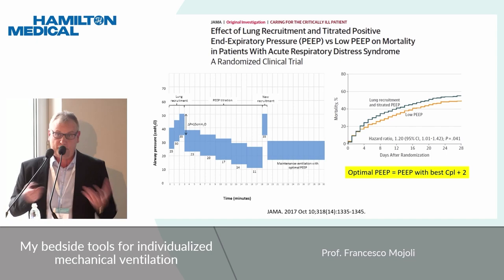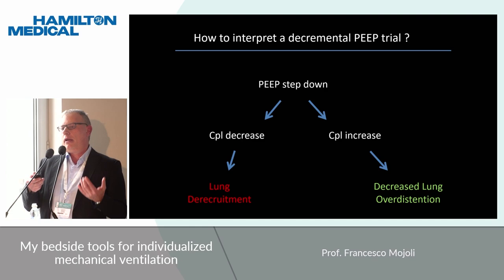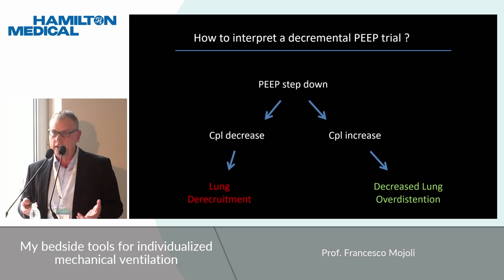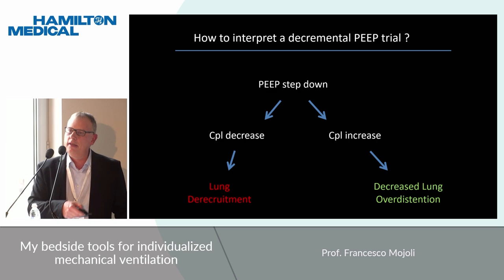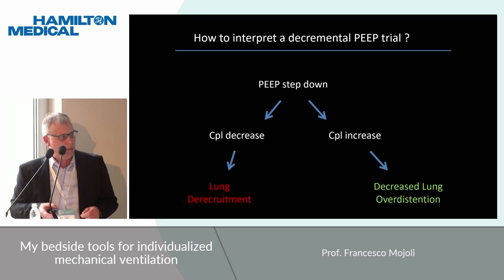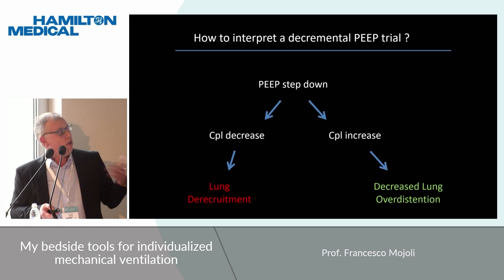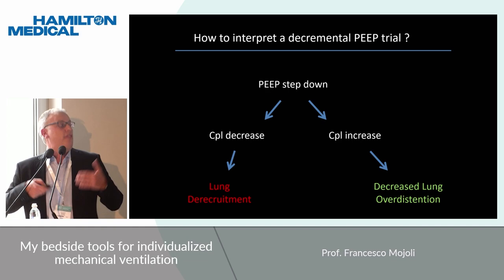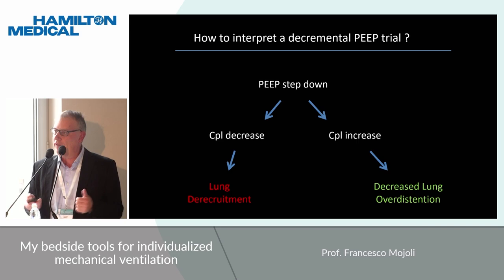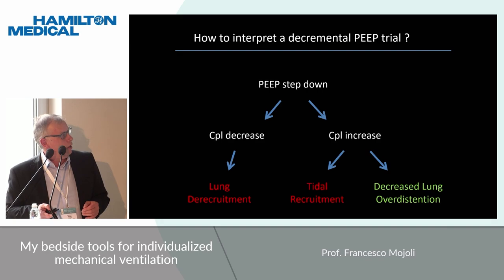Several explanations for this finding were proposed and discussed. I have one: sometimes the interpretation of the decremental PIP trial can be complicated by tidal recruitment — opening and closing. When you perform a PIP step down and see a decrease of compliance, this is easy to interpret as lung de-recruitment. Whereas if you see an increase of compliance, this can be due to decreased lung overdistension — a favorable mechanical effect — or to tidal recruitment, which we don't like. This is because the snap opening of collapsed alveoli generally generates a larger volume, so we measure higher compliance.